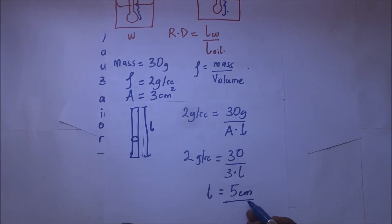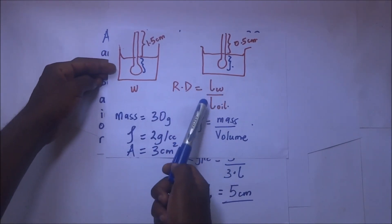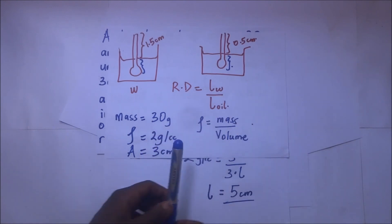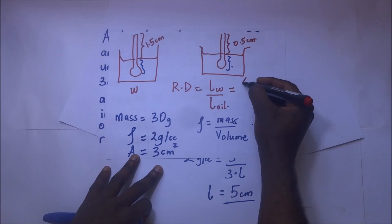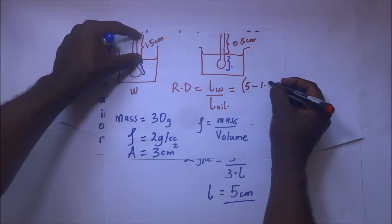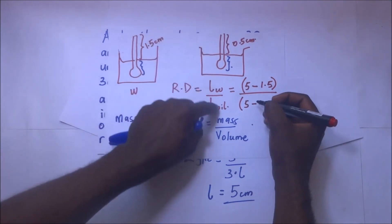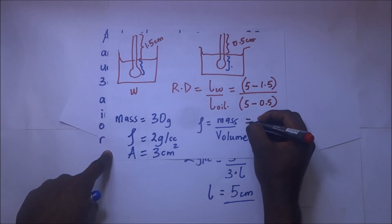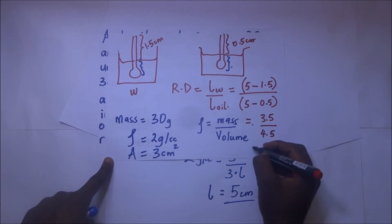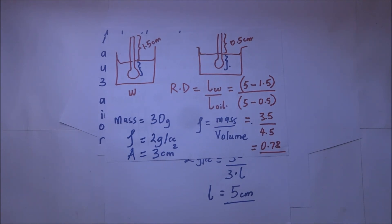Now we can find the relative density of the oil. The length submerged in water is 5 minus 1.5 = 3.5 cm. The length submerged in oil is 5 minus 0.5 = 4.5 cm. Relative density equals 3.5 divided by 4.5, which gives 0.78. So the relative density of the oil is 0.78.